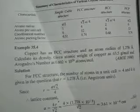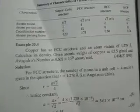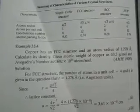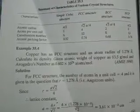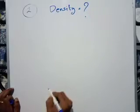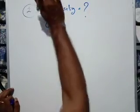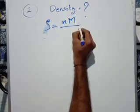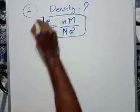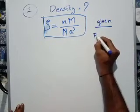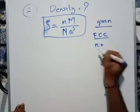Question 1: Copper has an FCC structure and an atomic radius of 1.278 Angstroms. Calculate its density. Given: atomic weight of copper is 63.5 grams per mole, and Avogadro's number is 6.02 into 10 raised to 24 atoms per mole. Density equals rho equals n times m divided by capital N times a cubed. For FCC, the number of atoms per unit cell is equal to 4.